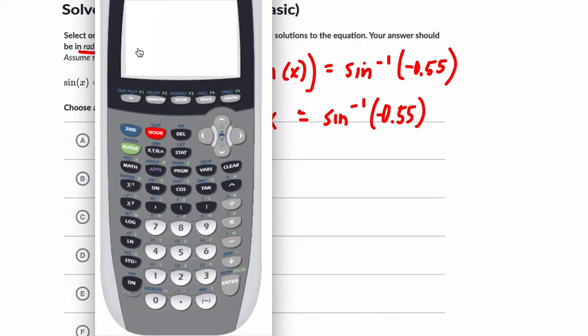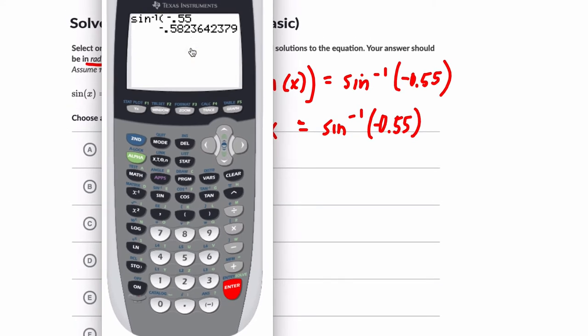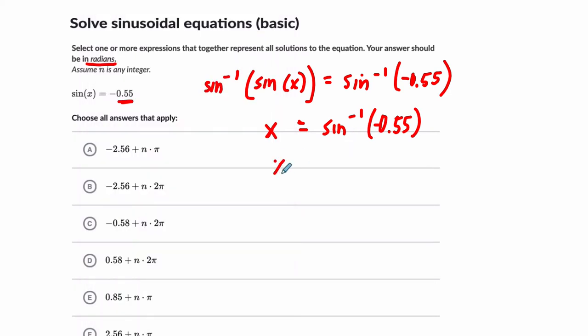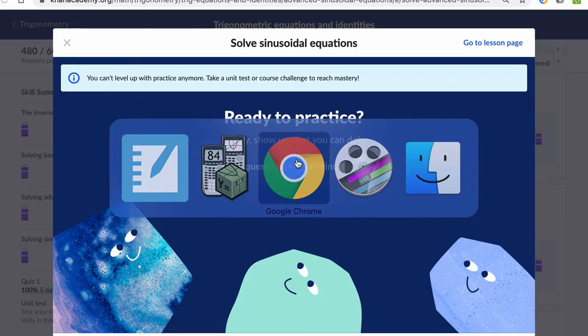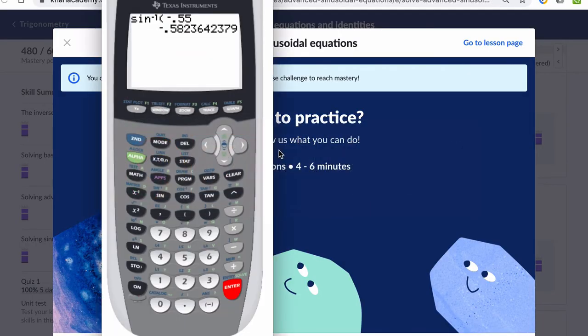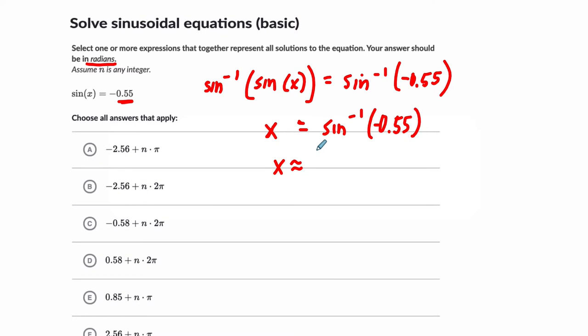In the calculator, hit second sine, negative 0.55, and it will give us the principal angle in radian measure. It's negative 0.5823. So x is about negative 0.5823 radians. You can see that out of our choices, the only thing close so far is choice C, and that is one of the answers.